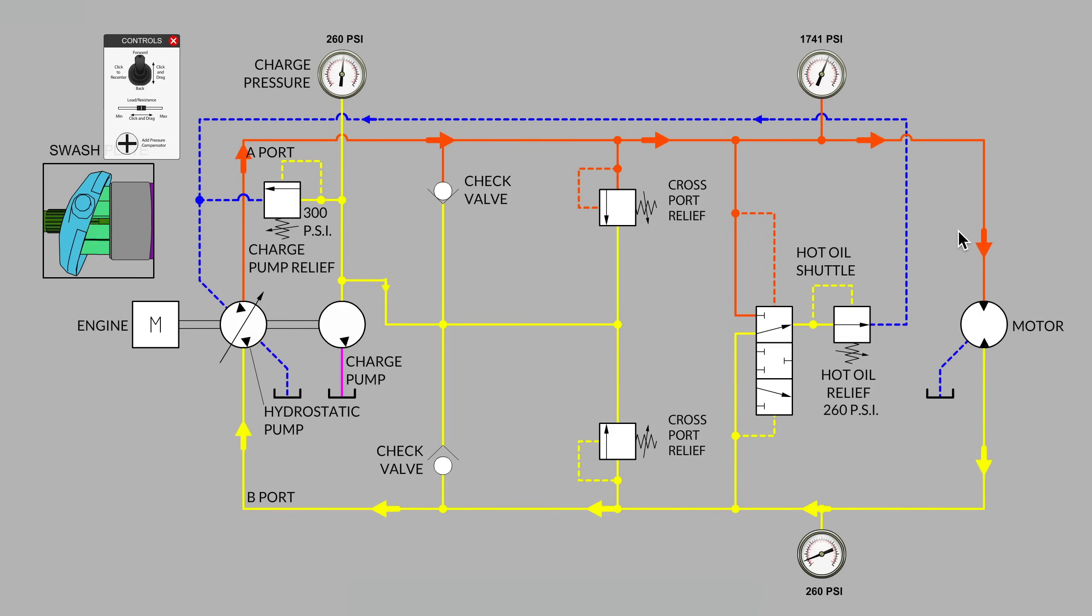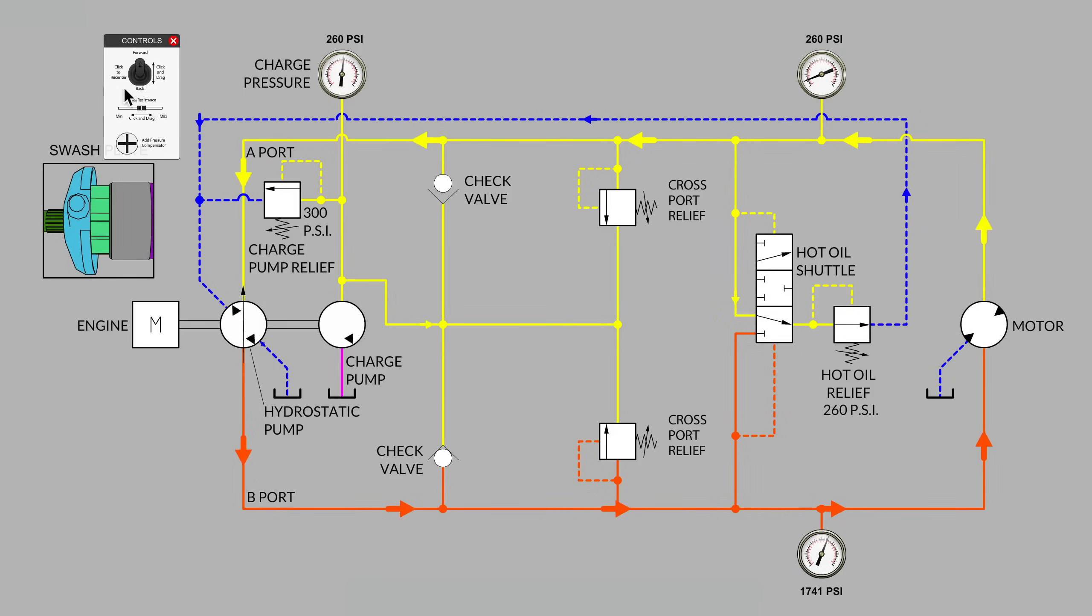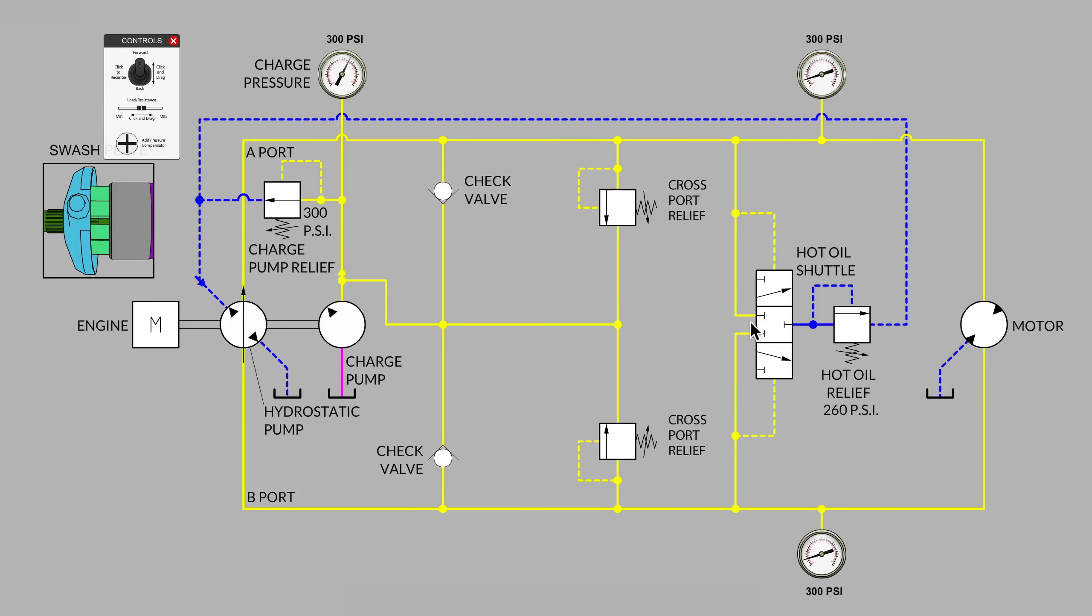I hope that makes sense. It's about the path of least resistance. It's either the hot oil relief valve that is the lower path of resistance when the shuttle is in position to bleed flow out of the loop, or it's the charge pump relief valve that is the path of least resistance when the hot oil shuttle is back in center position.